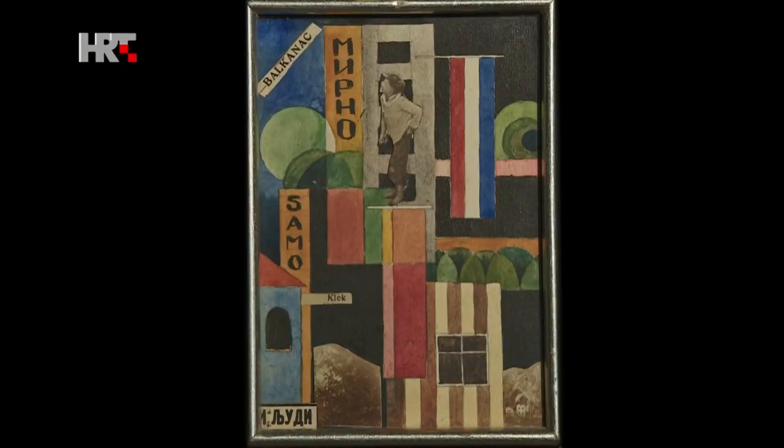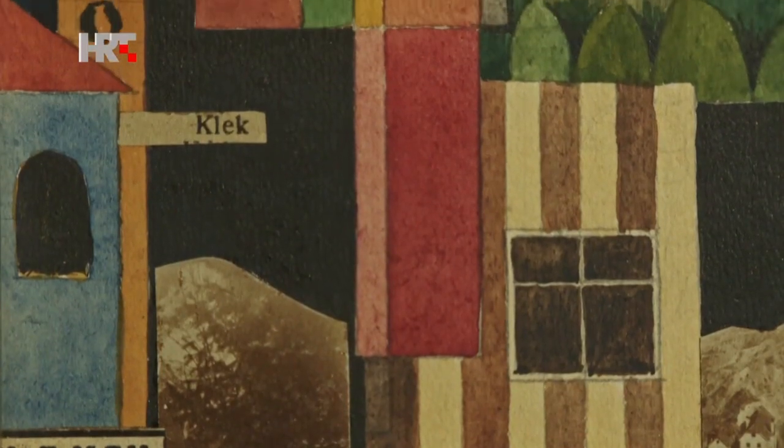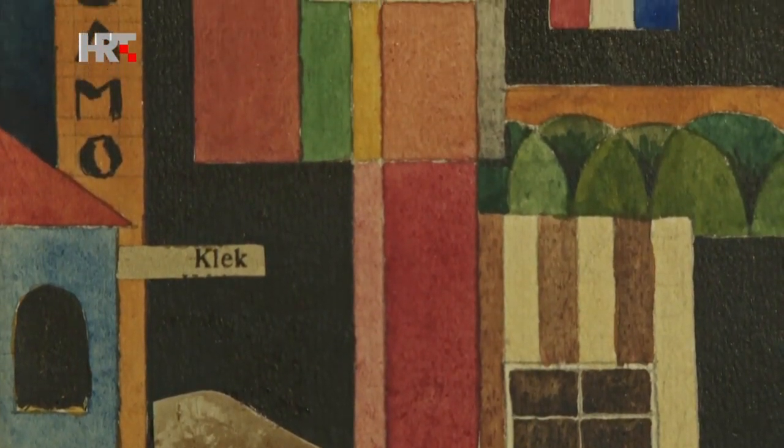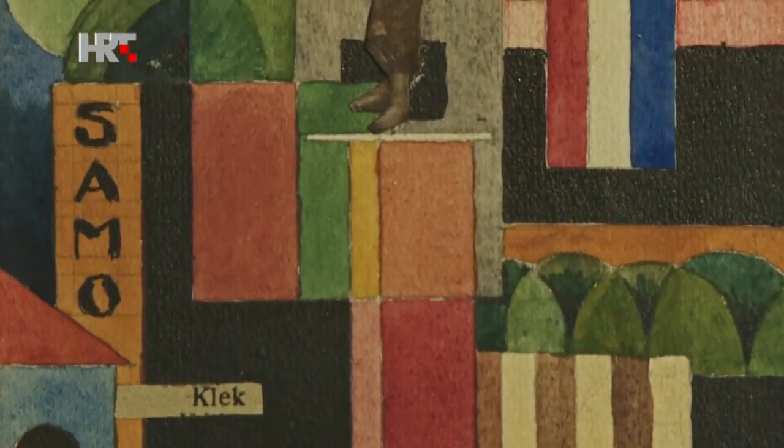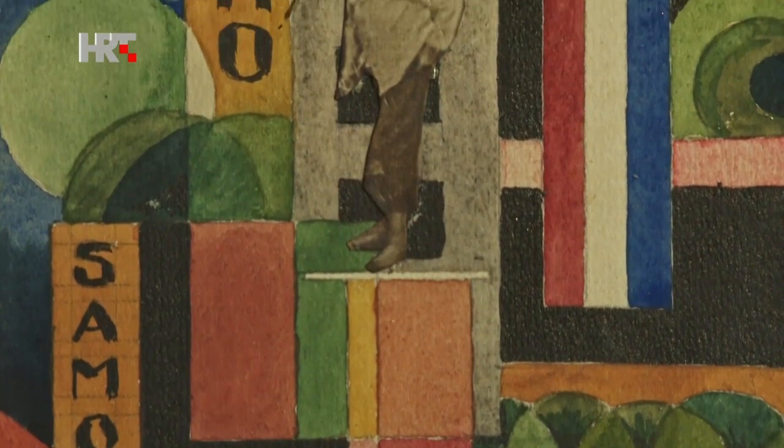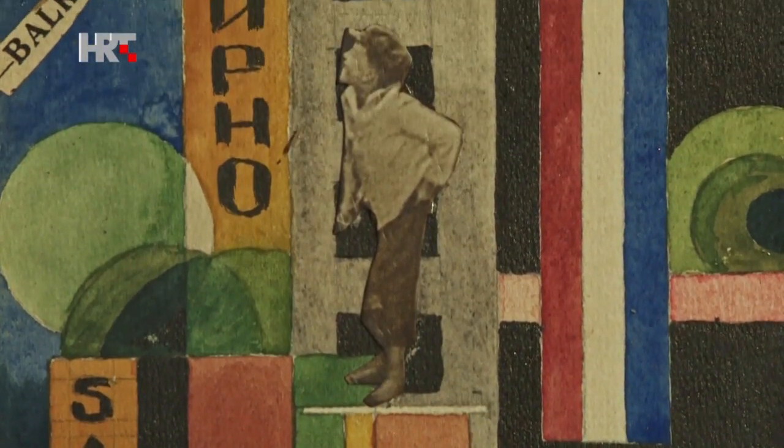In a picture titled Balkan Boy Peacefully, he combines watercolor, ink, and collage. In a composition of imaginary architecture, he incorporates the image of Jackie Coogan, the popular child actor from Chaplin's film The Kid, which was then showing in Zagreb.